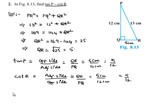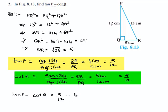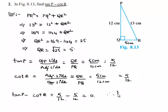Now tan P minus cot R equals 5 by 12 minus 5 by 12, which is equal to 0. Therefore tan P minus cot R equals 0.